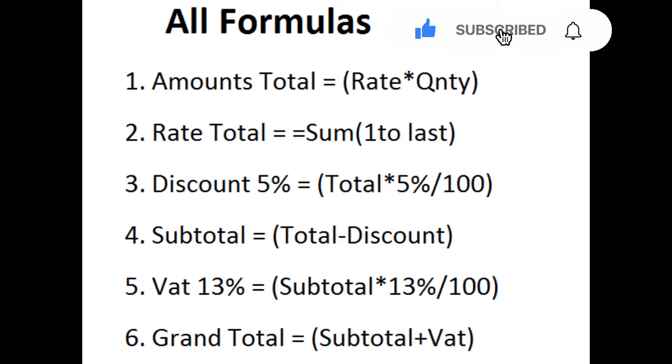Three: discount 5% is equal to total asterisk 5 divided by 100. Four: subtotal is equal to total minus discount.